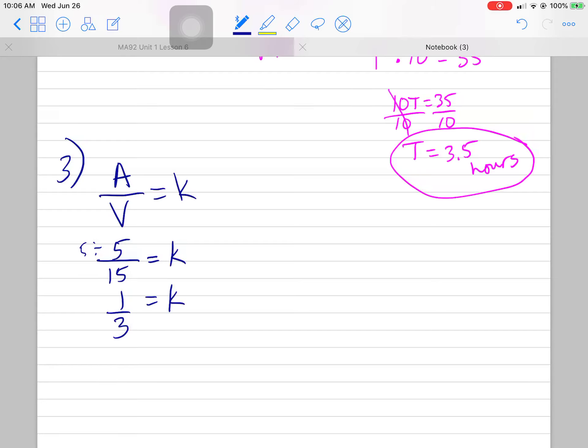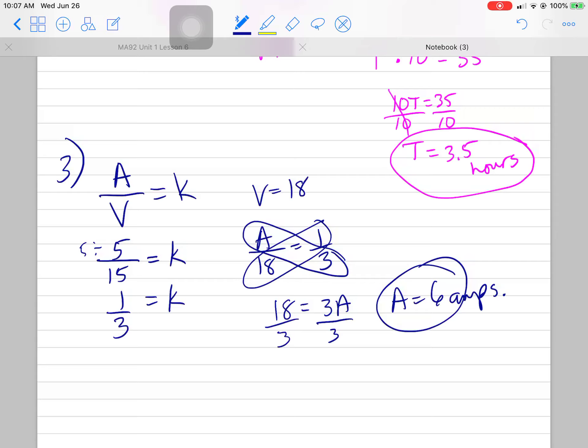Then the new situation is they tell you that the volts are now 18. Because of the inverse relationship, what happens to A if V goes up? If they're in there together, that means A has to go up too. So 18, constant is one third. And I don't know what A is. Cross multiply. That's going to be 18 equals 3A. Or 3A equals 18. Whichever you want to do. That means A equals 6. A equals 6 when V equals 18. 6 amps. Alright.